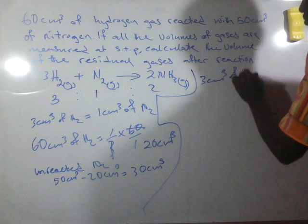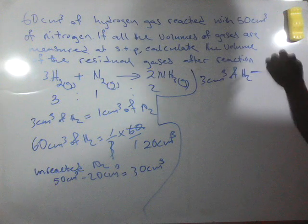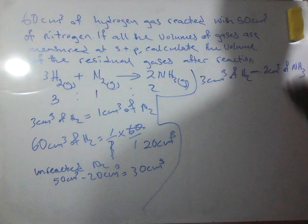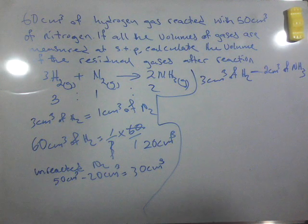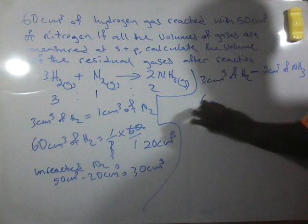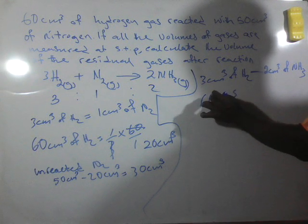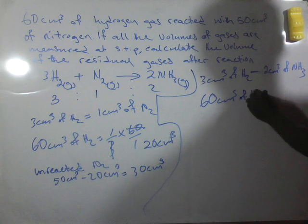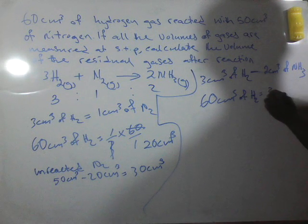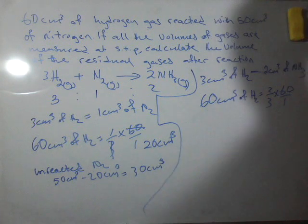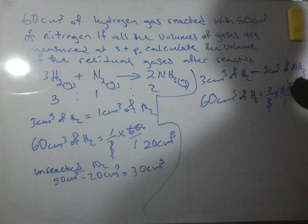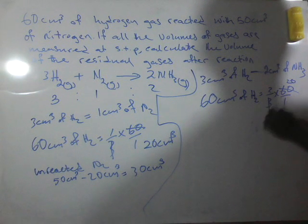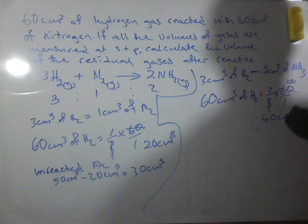From this ratio, 3 cm³ of hydrogen gas will give us 2 cm³ of ammonia gas. Then what would 60 cm³ produce? 60 cm³ of hydrogen will then be 2/3 × 60/1. When we cancel out, we'll have 40 cm³ of ammonia gas.